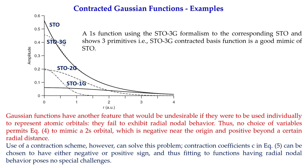Taking the combination of three Gaussians gives a dotted line that almost matches the STO bold line. STO-3G is able to replicate the electron density almost like the STO, so we can say STO-3G properly replicates the Slater type orbitals. We now get efficient calculations with accuracy.